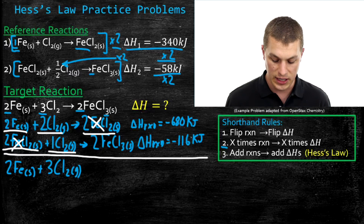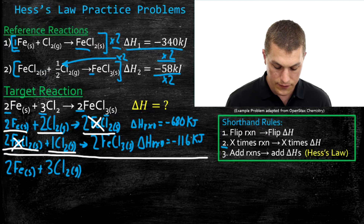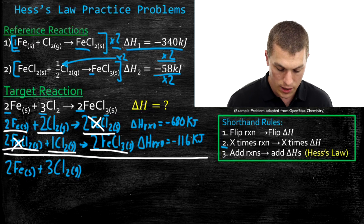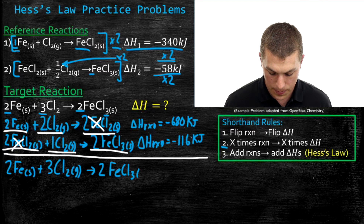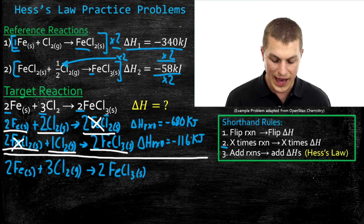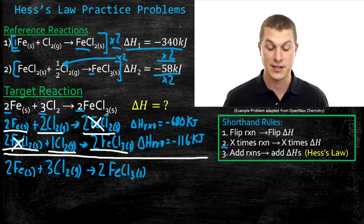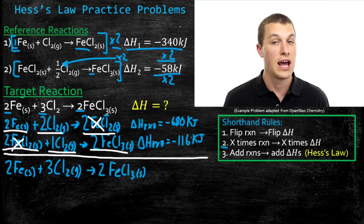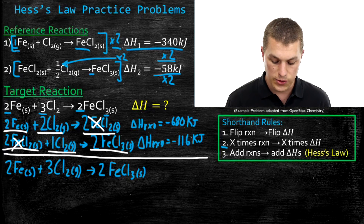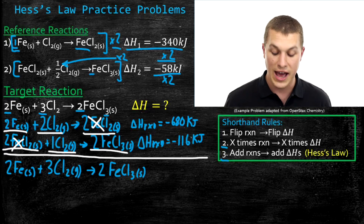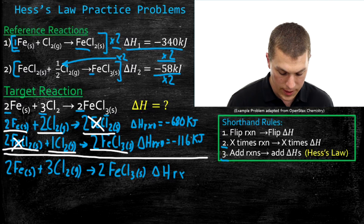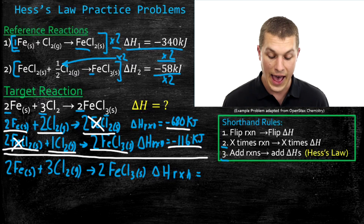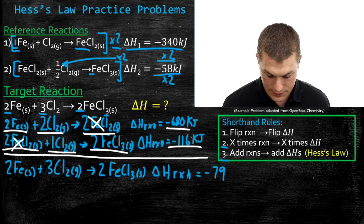On the product side, I bring down two FeCl3. Notice that matches my target reaction exactly. Since we've added those reactions together, we follow rule three: add the delta H's. So I add negative 680 and negative 116, and I get negative 796 kilojoules.